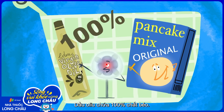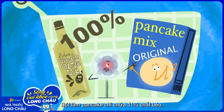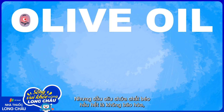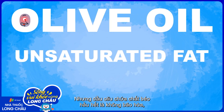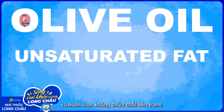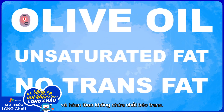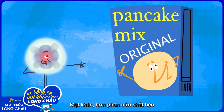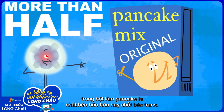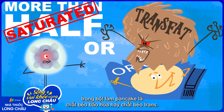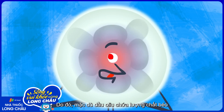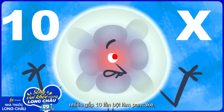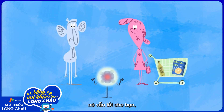So let's go back to our olive oil and pancake mix. Pancake mix is only 11% fat, but more than half of that fat is either saturated or trans fat. Olive oil is mostly unsaturated fat and has no trans fat at all. So even though olive oil has 10 times as much fat as pancake mix, it's healthy for you.